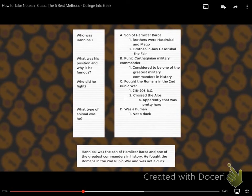And then the last part is the summary. So the summary here is that Hannibal was the son of Hamilcar Barca and one of the greatest commanders in history. He fought the Romans in the Second Punic War and was not a duck. That just recaps everything in the notes.